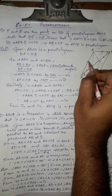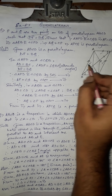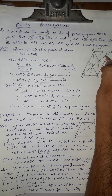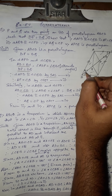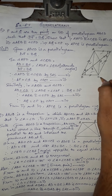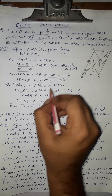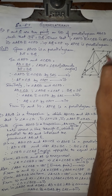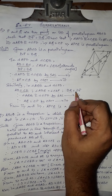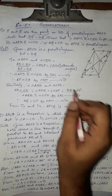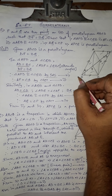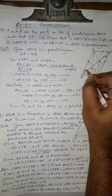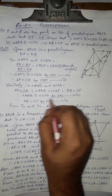Now we consider triangles AQB and CPD. Similarly, AB equals CD since they are opposite sides of parallelogram ABCD. Angle ABQ equals angle CDP because AB and CD are parallel and BD is a transversal, making them alternate interior angles. Also, BQ equals DP as given. So these are the three conditions for SAS congruence.